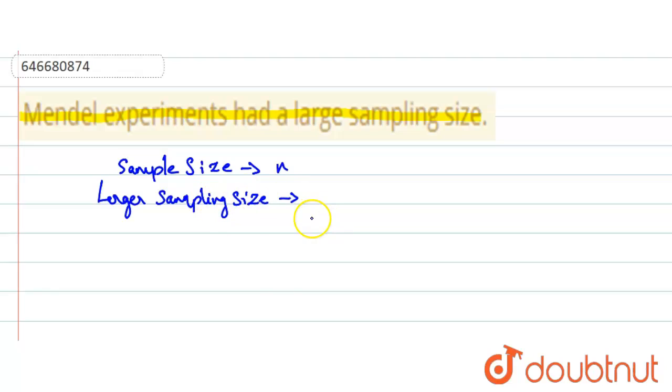Larger sampling size allows researchers to determine the average values of their data.